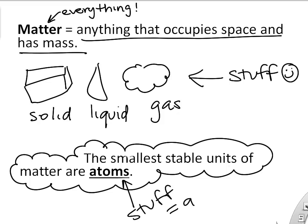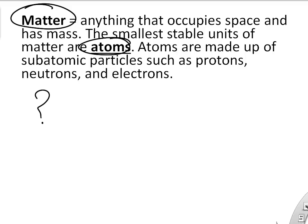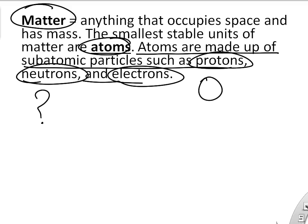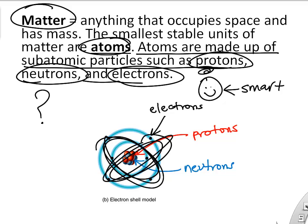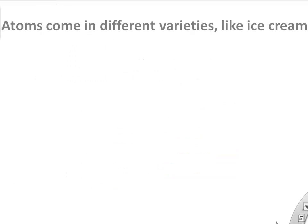Atoms are the smallest stable units of matter — the teeniest, tiniest things we'll really talk about in this class. Atoms are made up of atomic particles called protons, neutrons, and electrons. Protons and neutrons are found in the nucleus of atoms, while electrons orbit outside the nucleus.